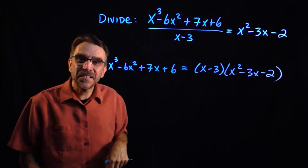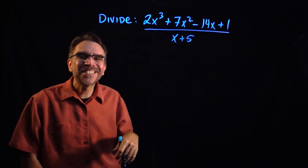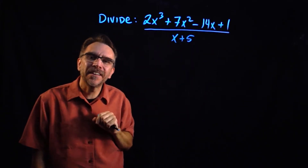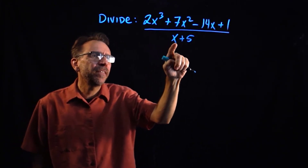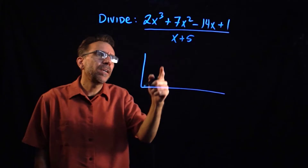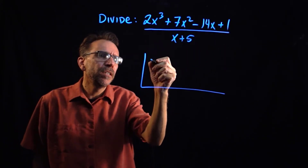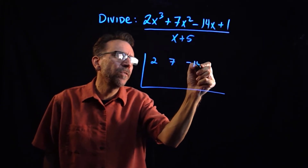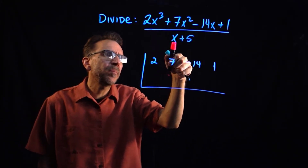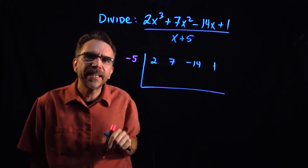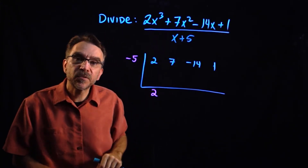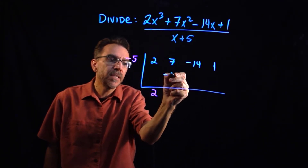Next, let's do one with a remainder. We have 2x cubed plus 7x squared minus 14x plus 1 divided by x plus 5. This is again set up for synthetic division with a linear factor. The coefficients for the dividend are 2, 7, negative 14, and 1. We're dividing by x plus 5, so the root is negative 5. We put negative 5 there and bring down the first term: 2.